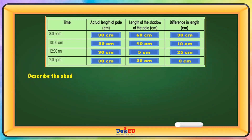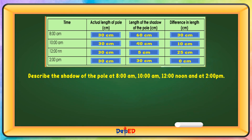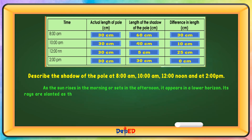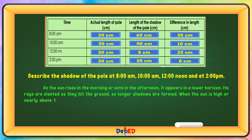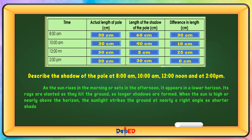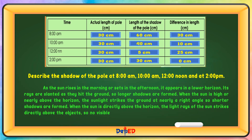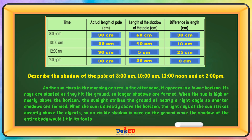Describe the shadow of the pole at 8 a.m., 10 a.m., 12 noon, and at 2 p.m. As the sun rises in the morning or sets in the afternoon, it appears in a lower horizon and its rays are slanted as they hit the ground, so longer shadows are formed. When the sun is high or nearly above the horizon, the sunlight strikes the ground at nearly a right angle, so shorter shadows are formed. When the sun is directly above, the light rays strike directly above the object, so no visible shadow is seen on the ground since the shadow of the entire body would fit in its footprint.